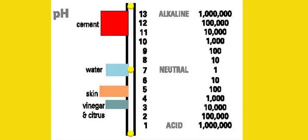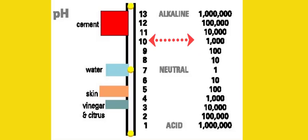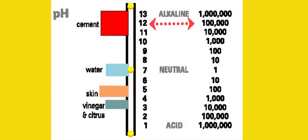The logarithm continues to grow by a power of 10 as you move away. Going up the scale: 8 is 10 times, 9 is a hundred, 10 is a thousand, 11 is 10,000, 12 is a hundred thousand, 13 is a million, and 14 is 10 million times stronger than neutral.